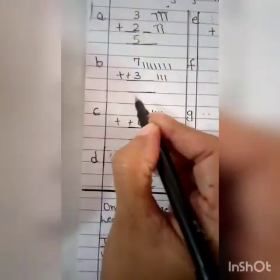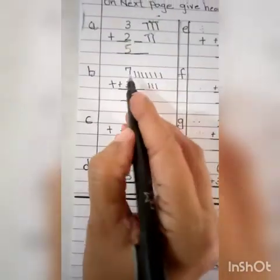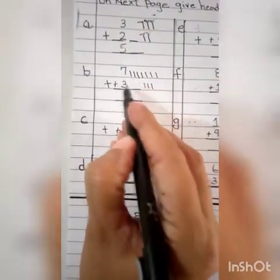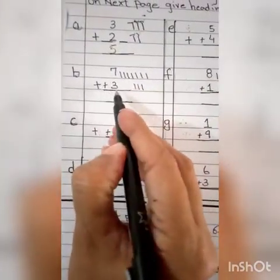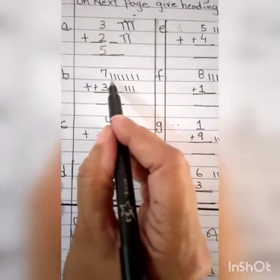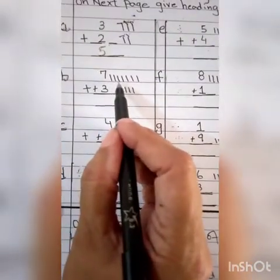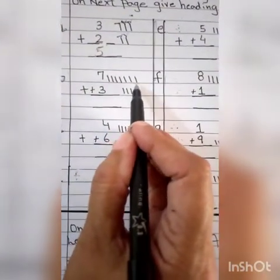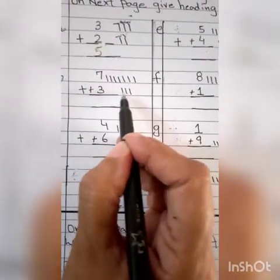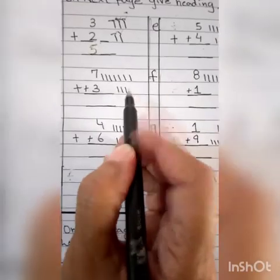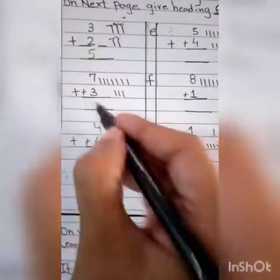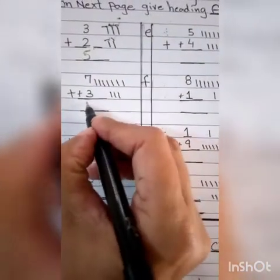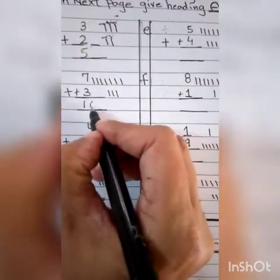Now, the second sum: 7 plus 3. Ab aapne count ki hain: 1, 2, 3, 4, 5, 6, 7, 8, 9, 10. Very good. Answer is 10.